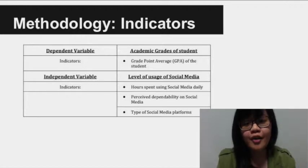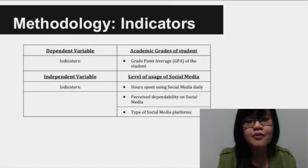The dependent variable of the survey is the academic performance of the student, indicated by his or her GPA. The independent variable is the level of usage of social media, indicated by the hours spent using social media daily, the perceived dependability of the student on social media, and the type of social media being used, whether it can be used for academic purposes or purely for entertainment.